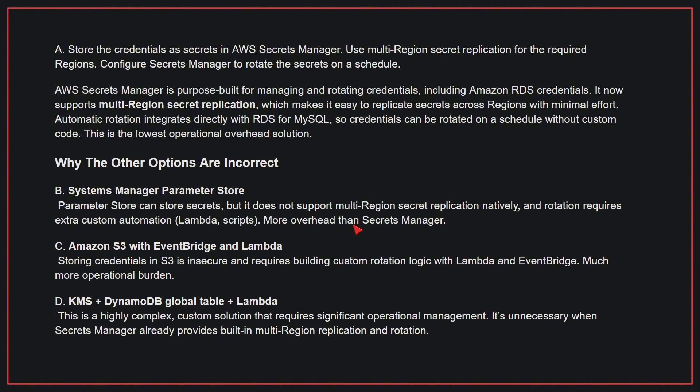Why the other options are incorrect: B — Systems Manager Parameter Store does not support multi-region secret replication natively, and rotation requires extra custom automation, resulting in more overhead than Secrets Manager. C — Amazon S3 with EventBridge and Lambda requires storing credentials in S3, which is insecure, and requires building custom rotation logic — much more operational burden. D — KMS plus DynamoDB Global Table plus Lambda is a highly complex custom solution requiring significant operational management, unnecessary when Secrets Manager already provides built-in multi-region replication and rotation. Therefore, the correct answer is A.